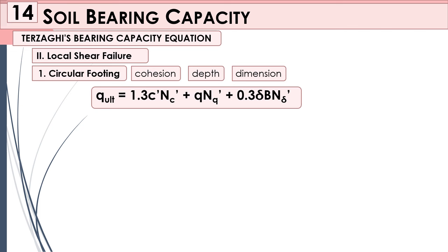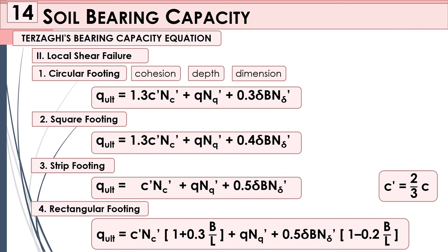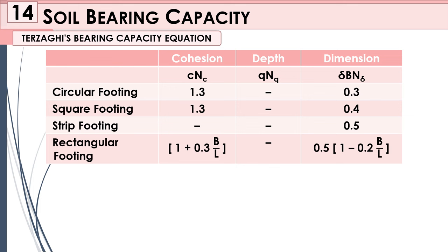For local shear failure, for your circular footing, the cohesion used is two-thirds of c — that's the c-prime you'll see in the formula. The formula is the same; the only difference is that we now use c-prime, which is two-thirds of the original cohesion. It is more important to memorize the rectangular footing formula since most equations are based on it.